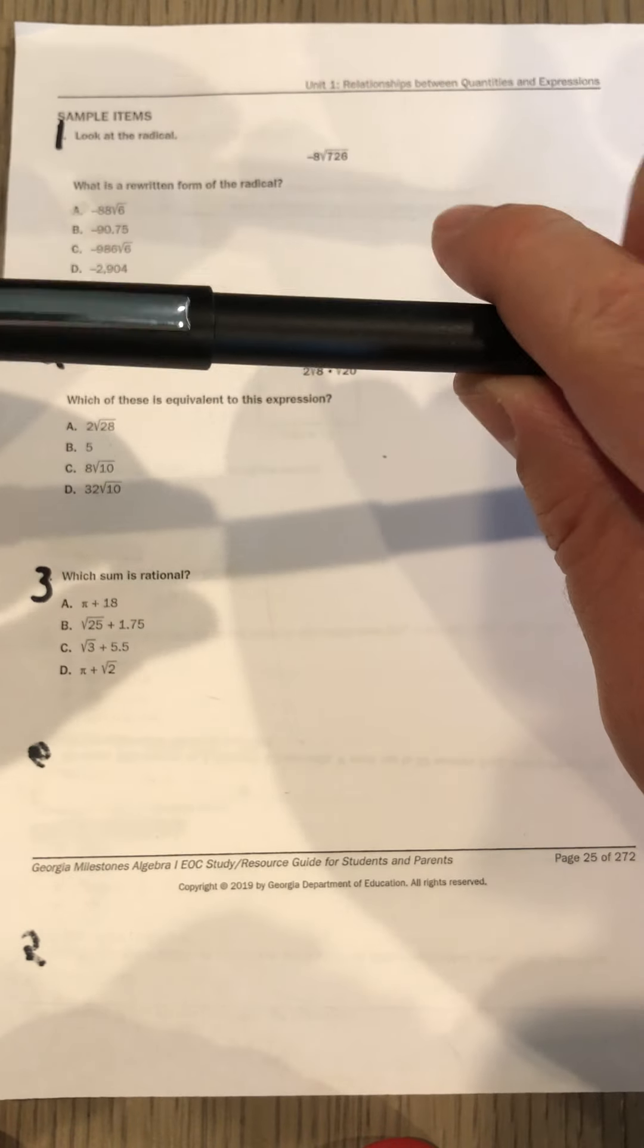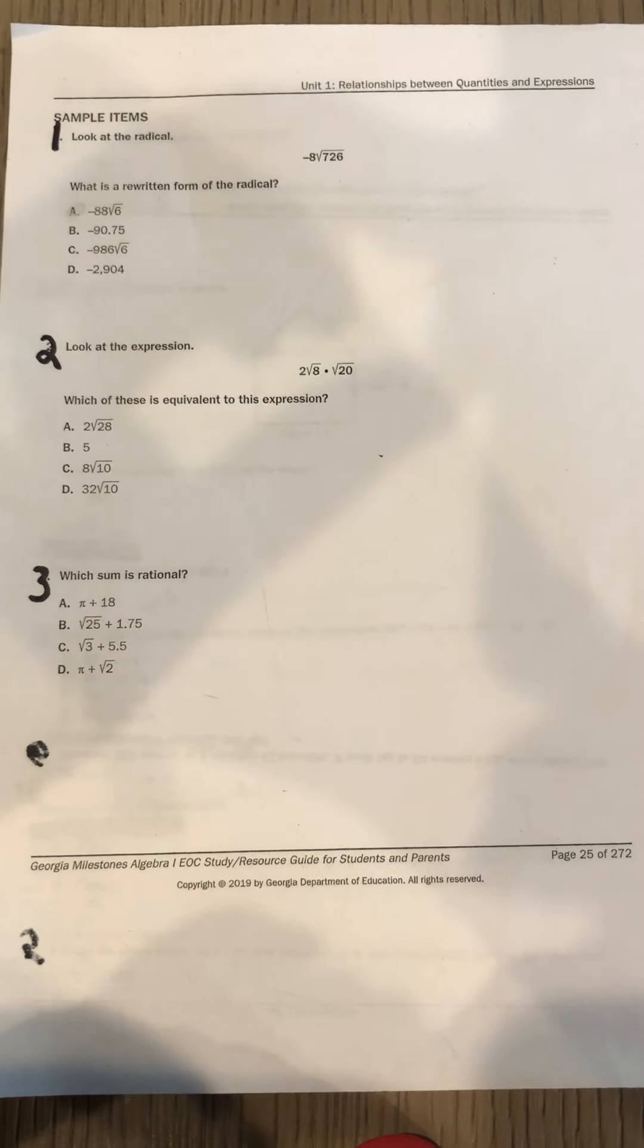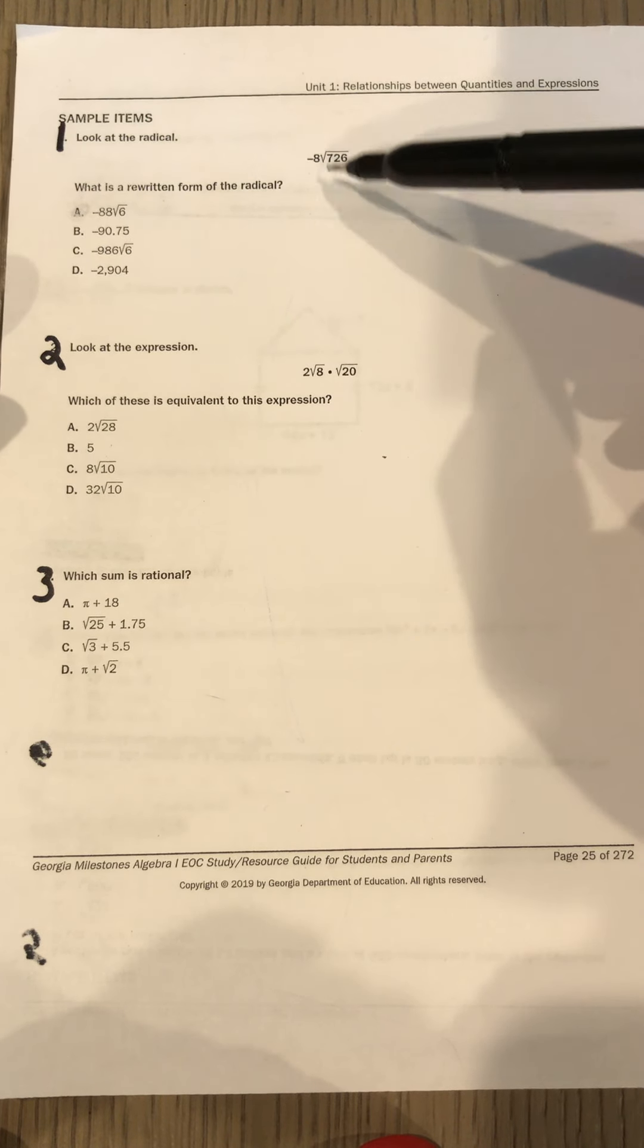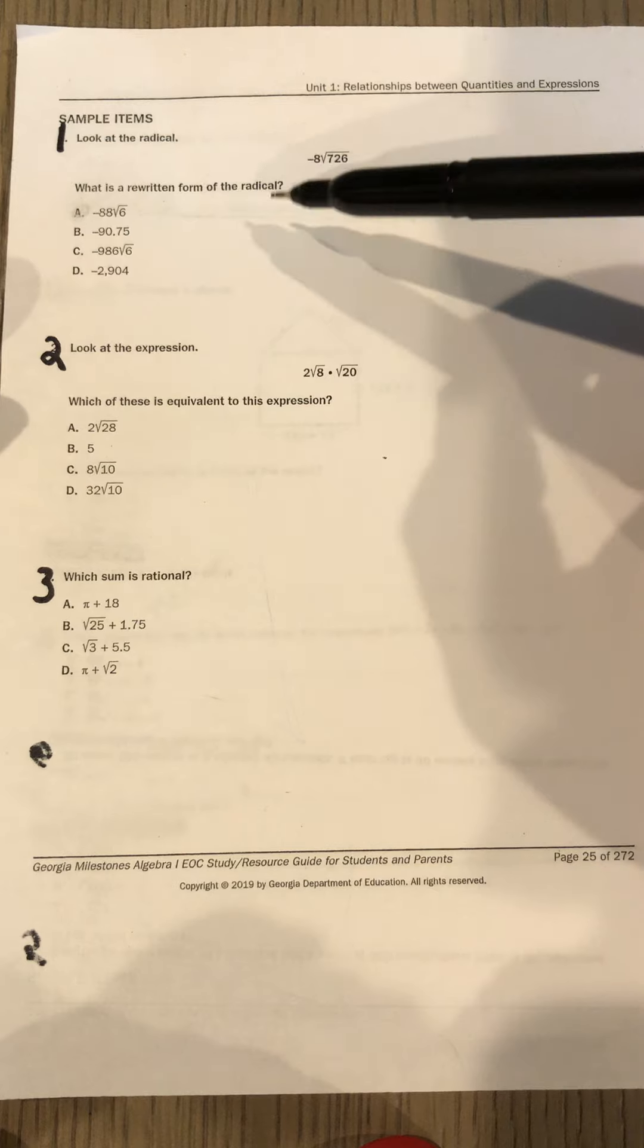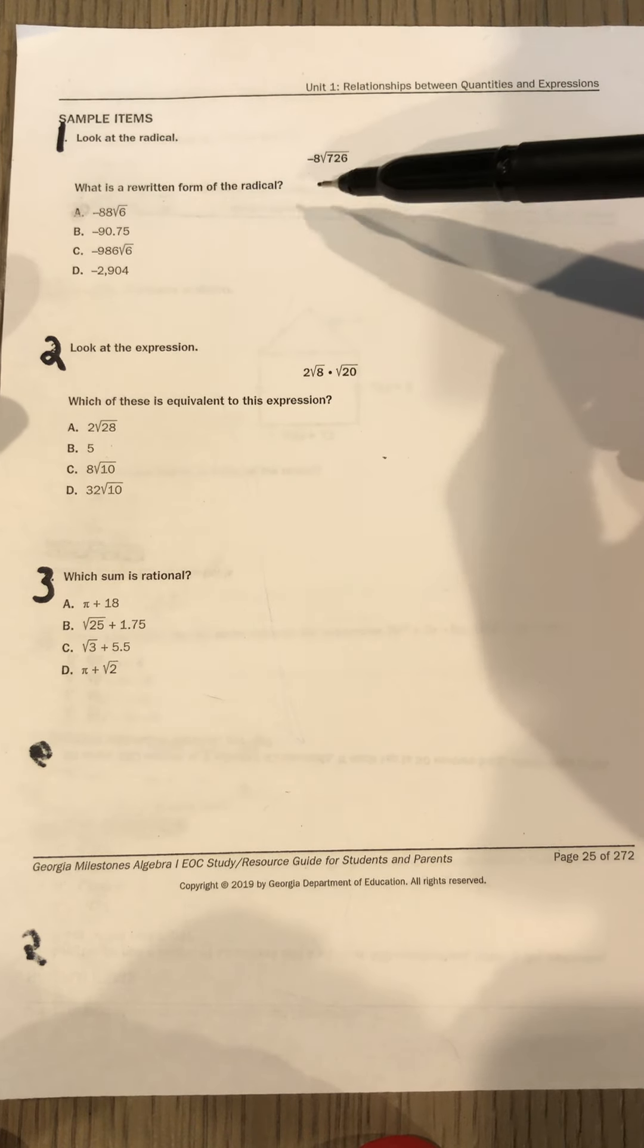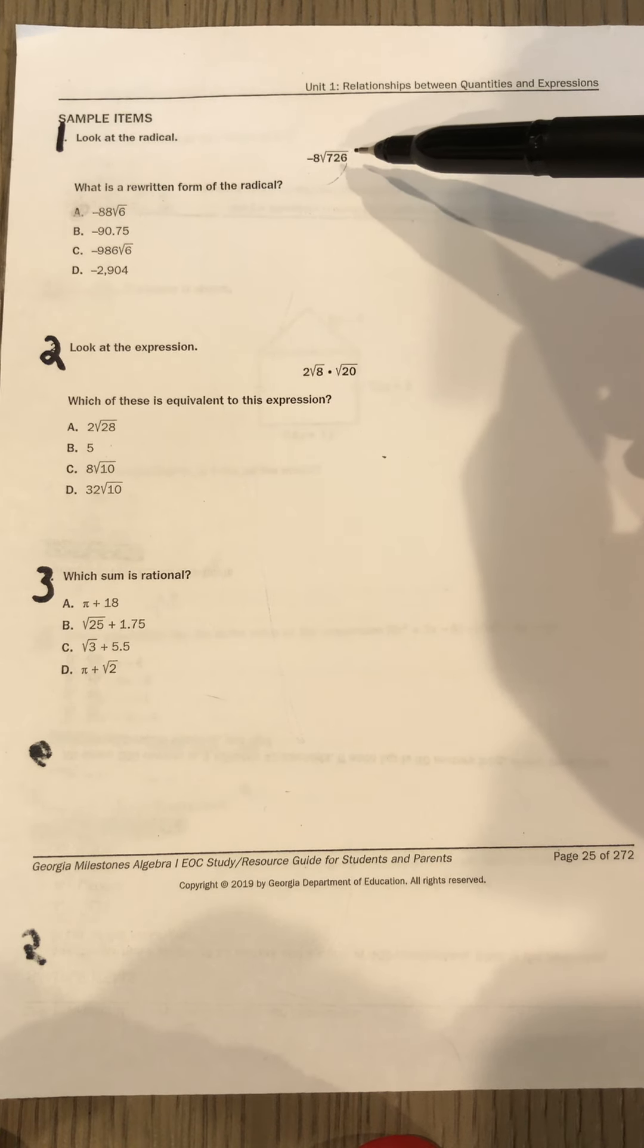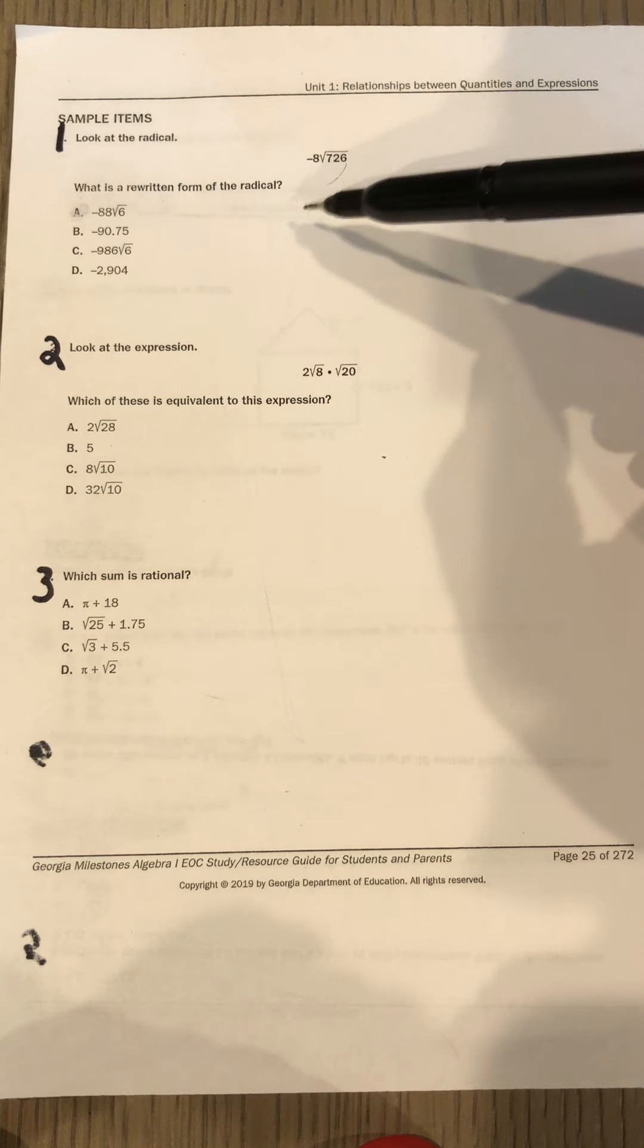But I will give you the answers a little bit later this evening, okay? And I'll put them out on Remind for you. Alright, so number one. Look at the radical, there it is, there's the radical right there. Okay, what is a rewritten form of this radical? Well, okay, so the real way to do this is to simplify this radical. You know, find a perfect square that could fit into 726.